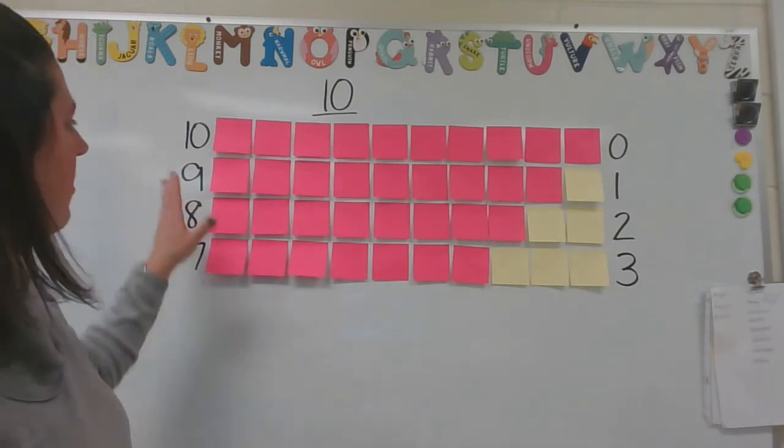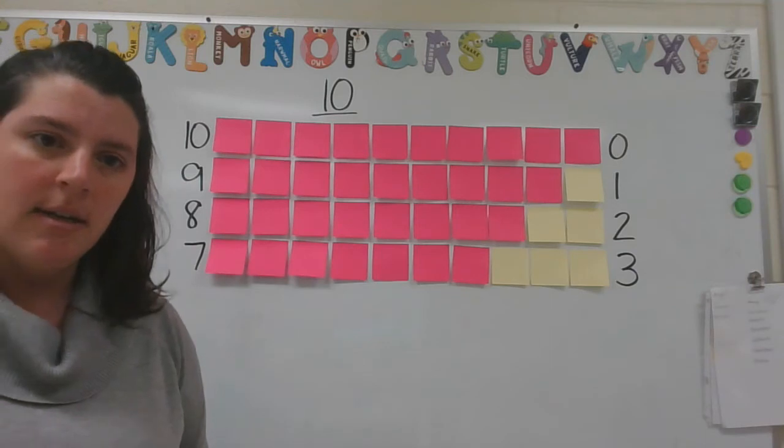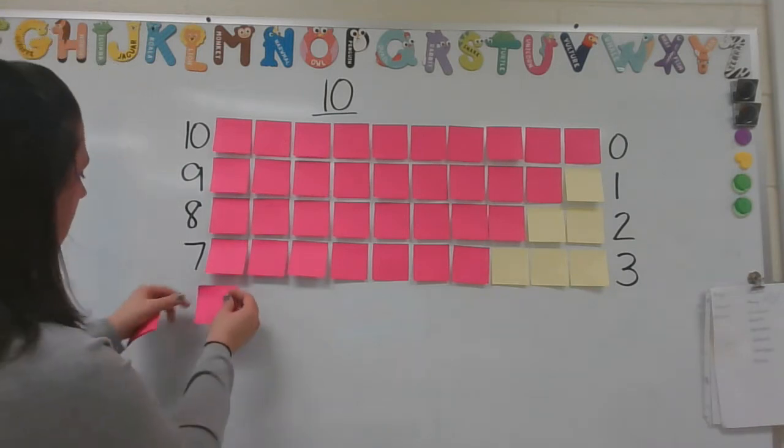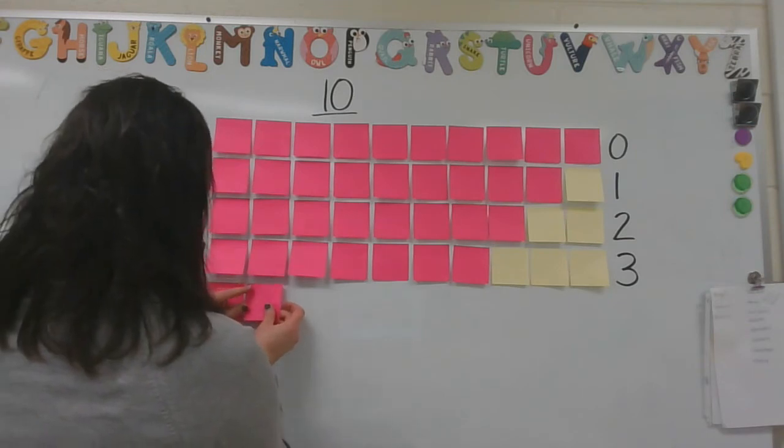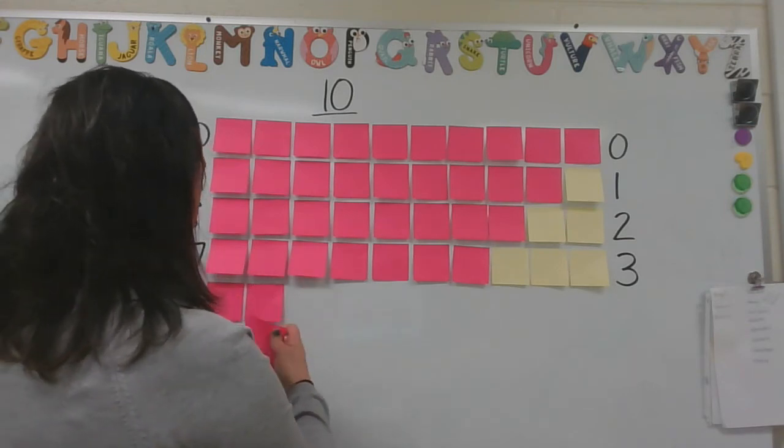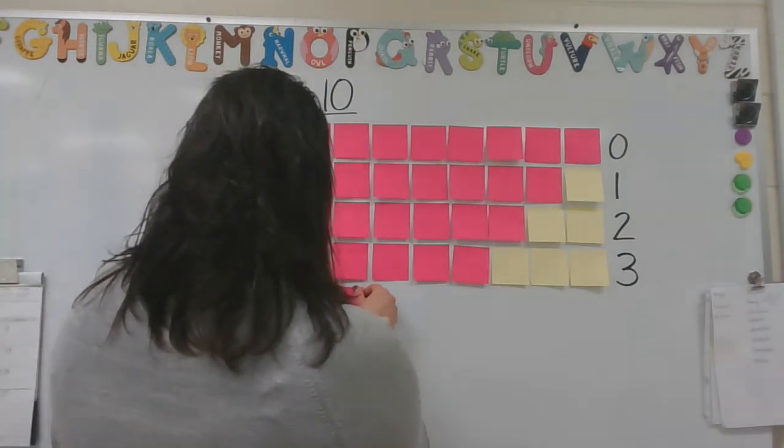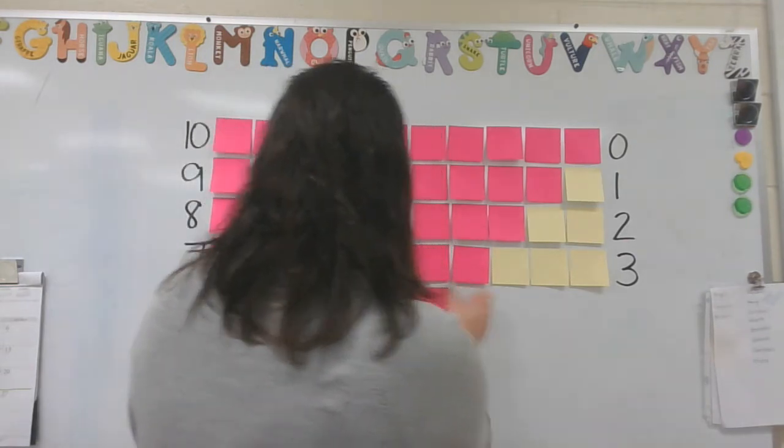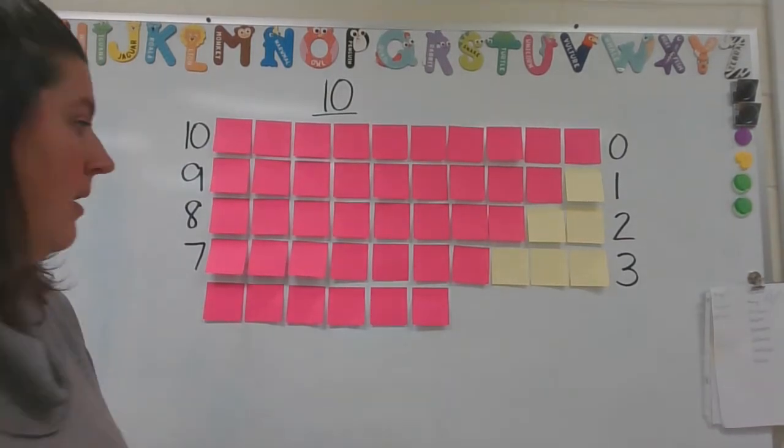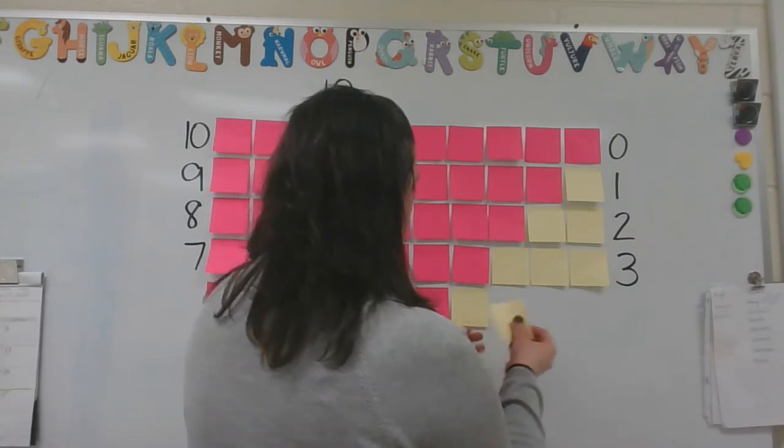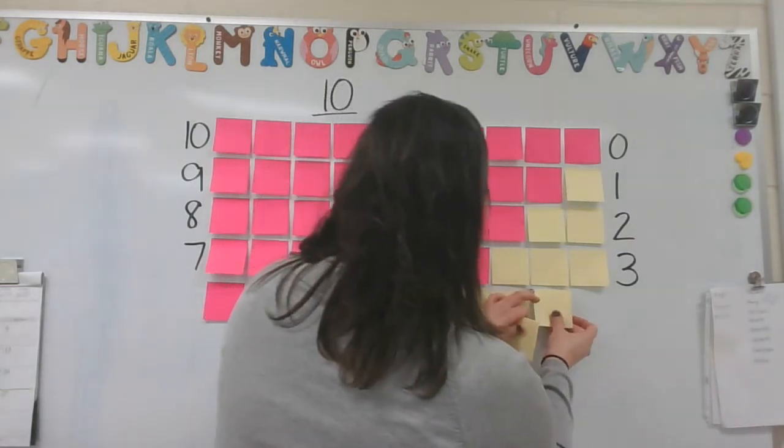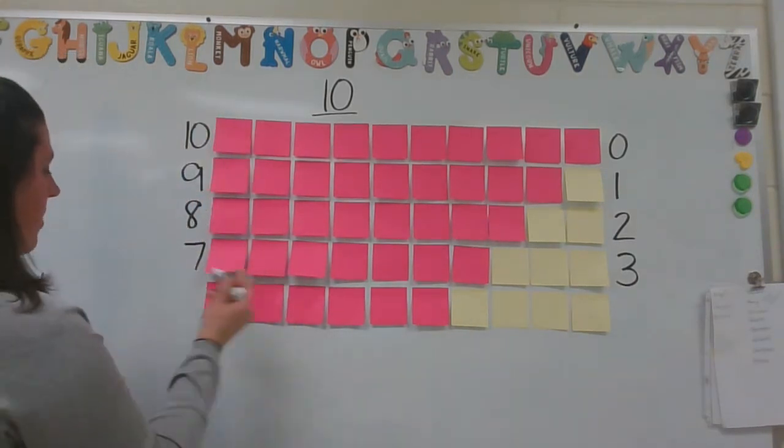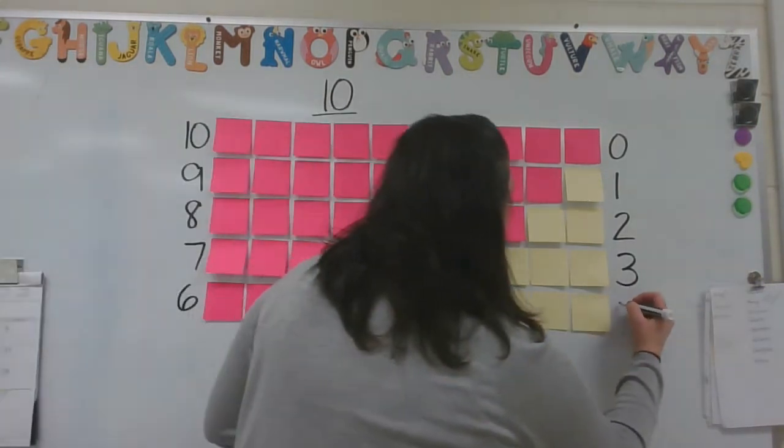Do you notice anything about these rows of colored sticky notes or the numbers? I'm starting to notice something. I wonder if you do. Let's do another one. Another combination that someone said was 1, 2, 3, 4, 5, 6 pink sticky notes and 1, 2, 3, 4 yellow. So let's add those numbers. This row is 6 pink and 4 yellow.